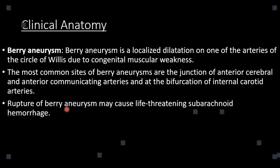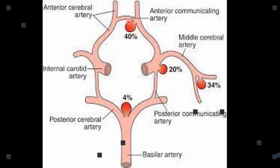Subarachnoid hemorrhages have a very poor prognosis and, if not managed early, they can result in death. The most common site of berry aneurysms is at the junction between the anterior cerebral artery and the anterior communicating artery — that is the most common site, accounting for about 40% of aneurysms. The second most common site is at the bifurcation of the internal carotid artery into the middle cerebral artery and the anterior cerebral artery. These two are the most common sites within the circle.